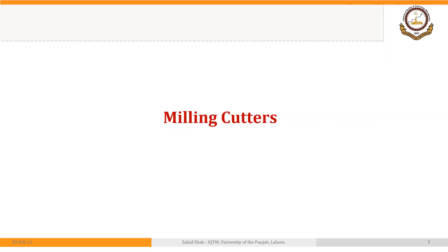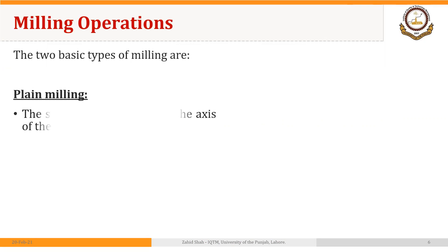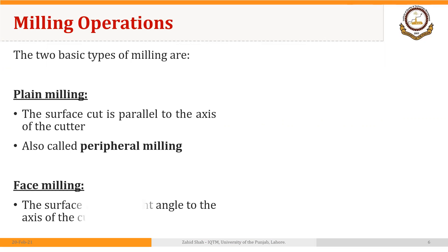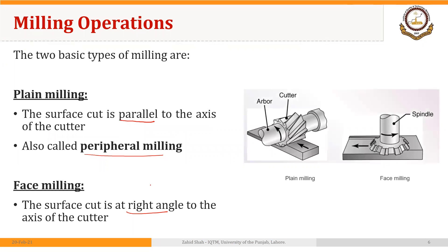First we will discuss milling cutters. There are two types of milling operations: plain milling and face milling. In plain milling, the surface cut is parallel to the axis of the cutter, so it is also called peripheral milling. In face milling, the surface cut is at a right angle to the axis of the cutter. In plain milling, the axis of the cutter and the surface being cut are parallel.